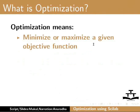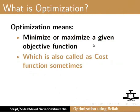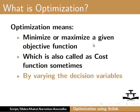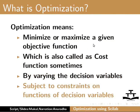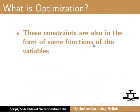Optimization means minimize or maximize a given objective function, which is also called a cost function sometimes, by varying the decision variables. The decision variables are varied subject to predefined constraints. These constraints are also in the form of some functions of the variables.